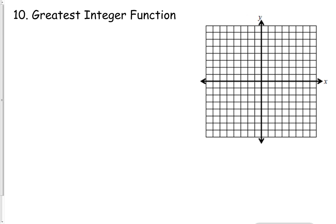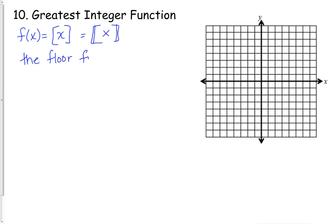I want to do a quick explanation of what the greatest integer function is. We write this symbolically as f of x equals the square brackets of x. In some textbooks, they'll put a second line inside the square brackets — both notations show the greatest integer of x. The greatest integer is also called the floor function, and you'll see why in just a second.